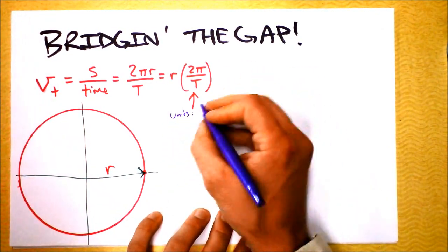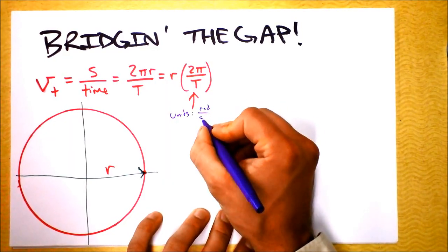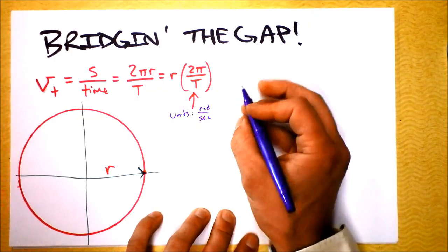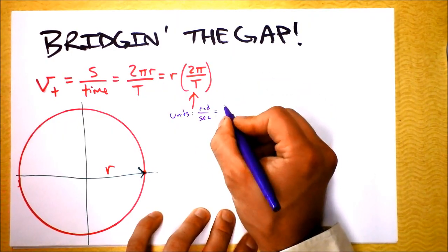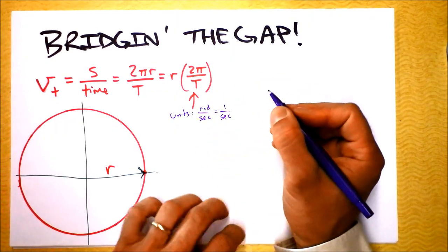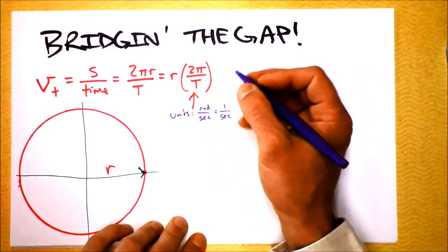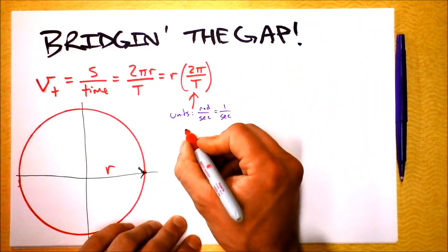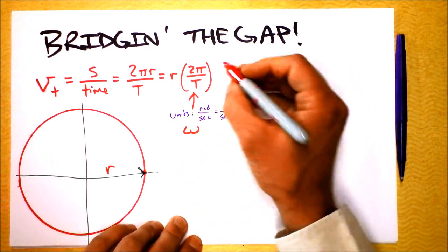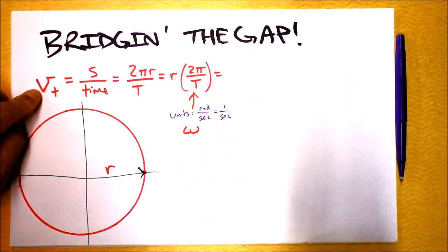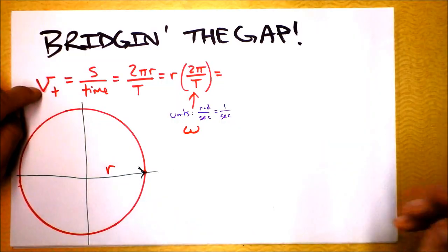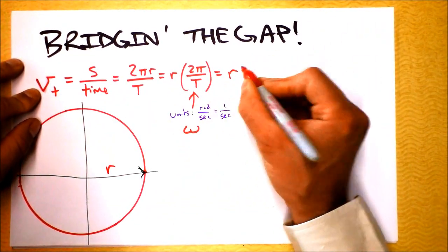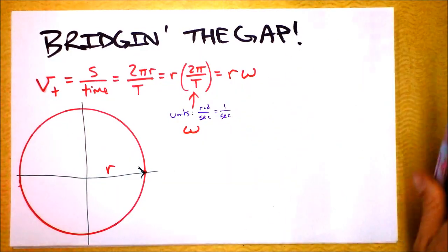It might have units of radians per second, because 2π really does look like radians. Remember, radians are kind of phantom units — they go away and come back. The units are 1 over seconds, and this is in fact the same thing as omega, ω. So we can now write down tangential speed equals r times ω.